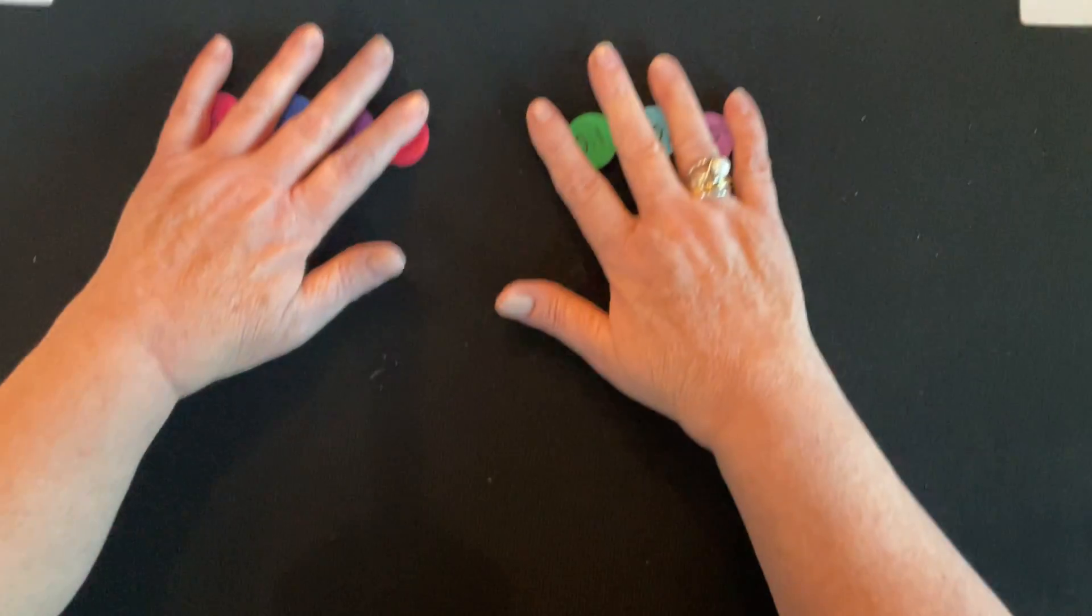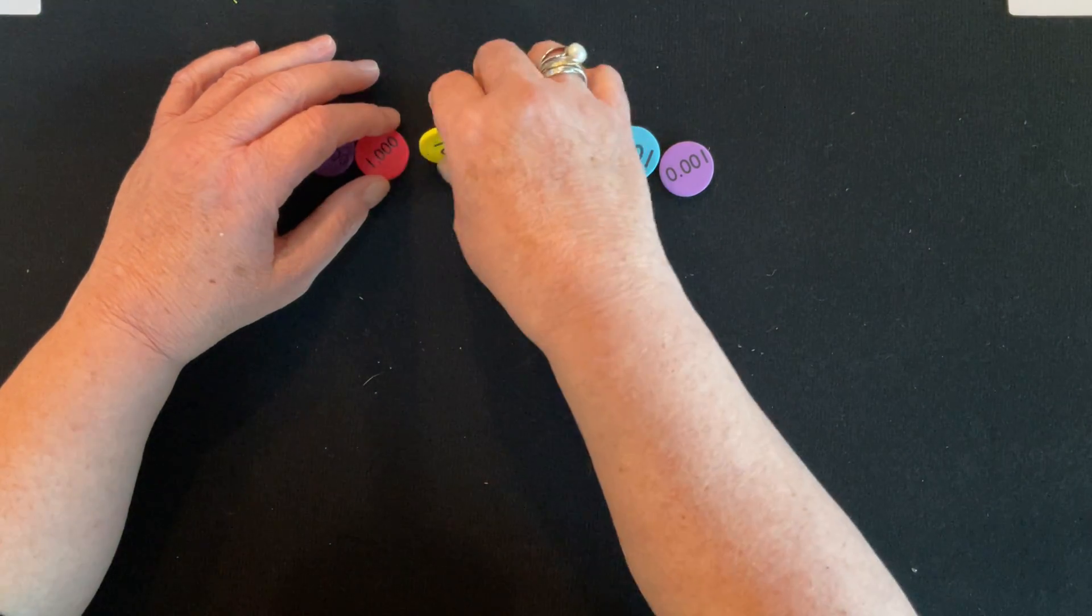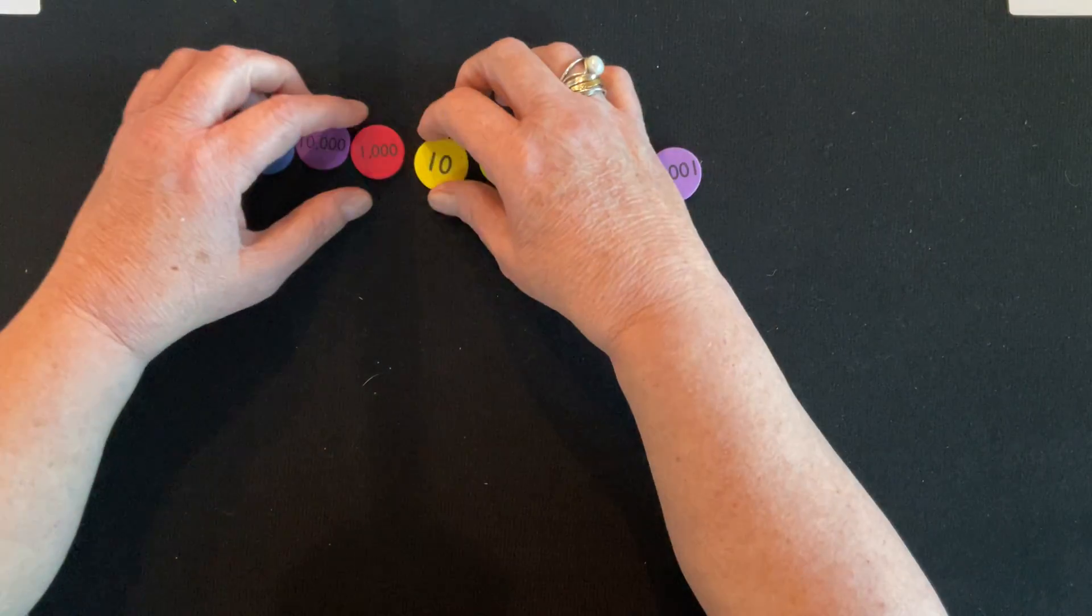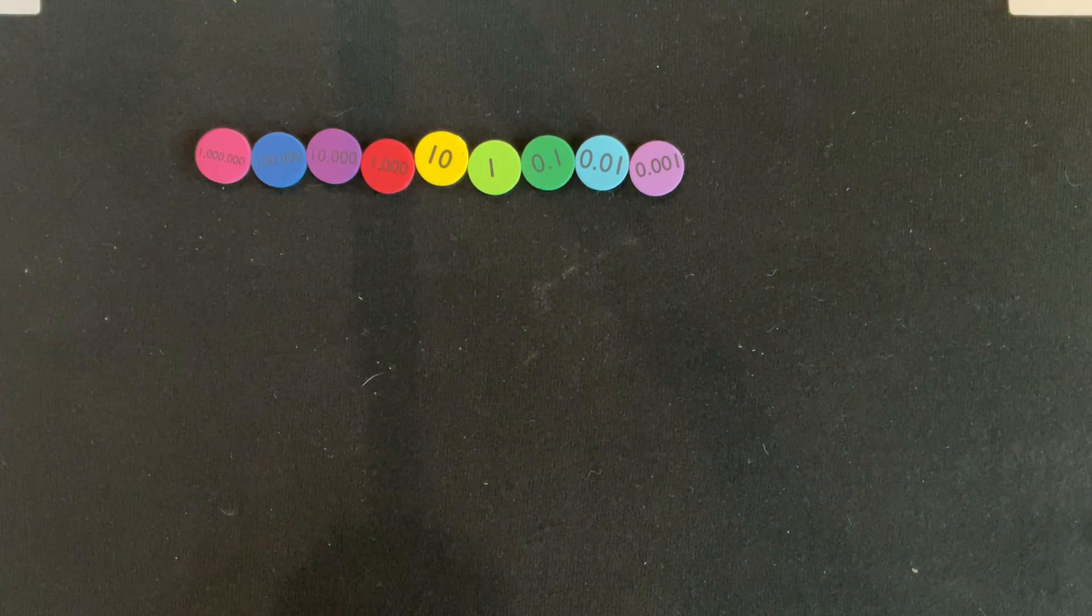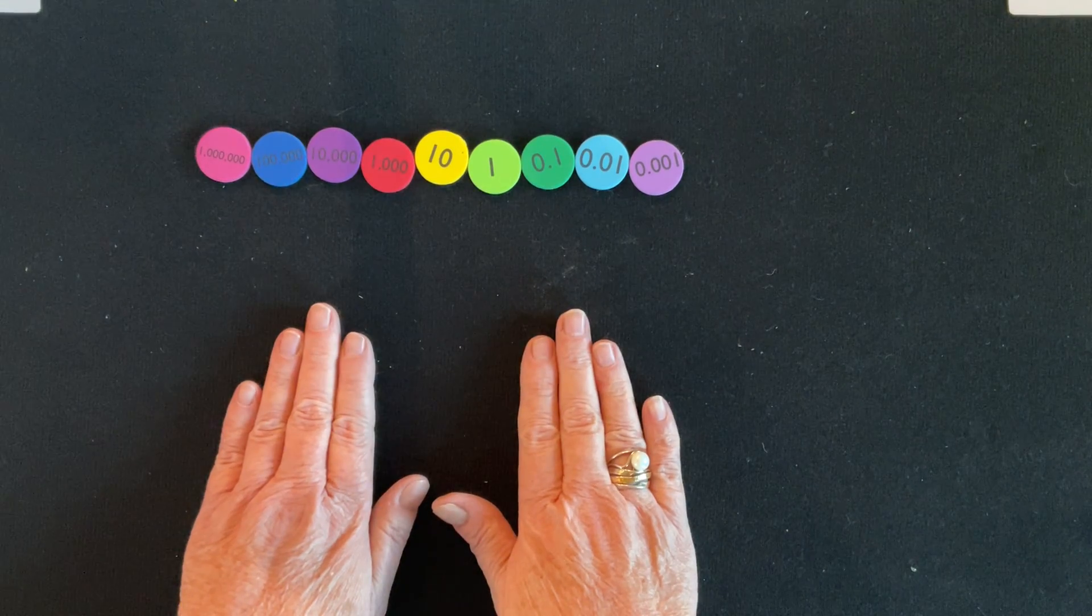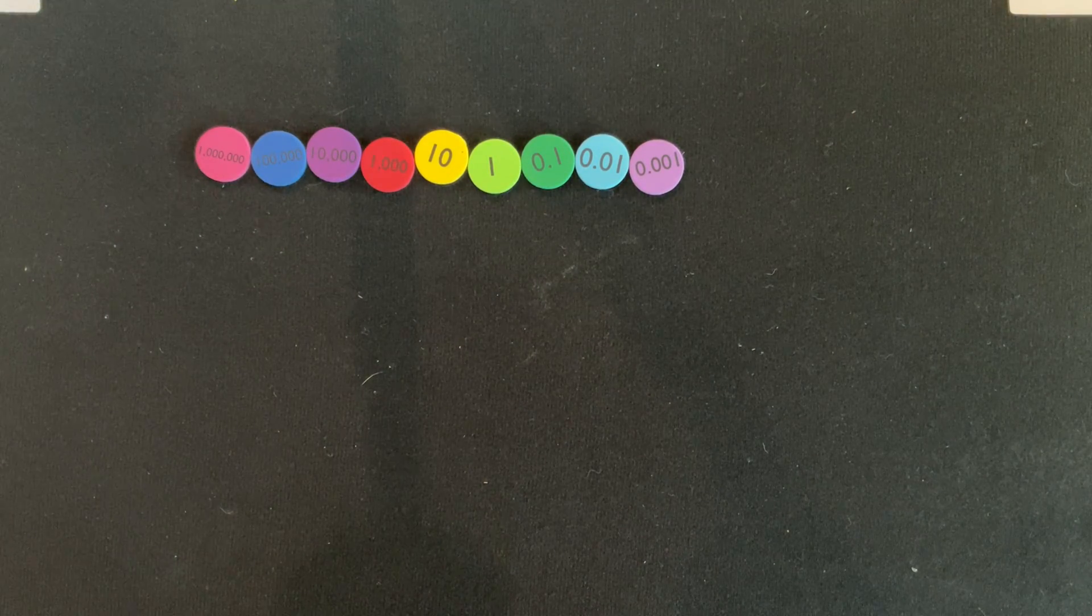What would be some important things, like why do I want to use these? The first thing I would tell you: go through your standards, read them, and think is there any way that this particular manipulative, these place value disks, could support this standard. Use your teacher creativity.